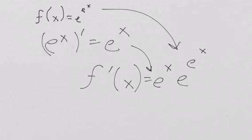And that's what the derivative looks like. It's e to the x times e to the e to the x.